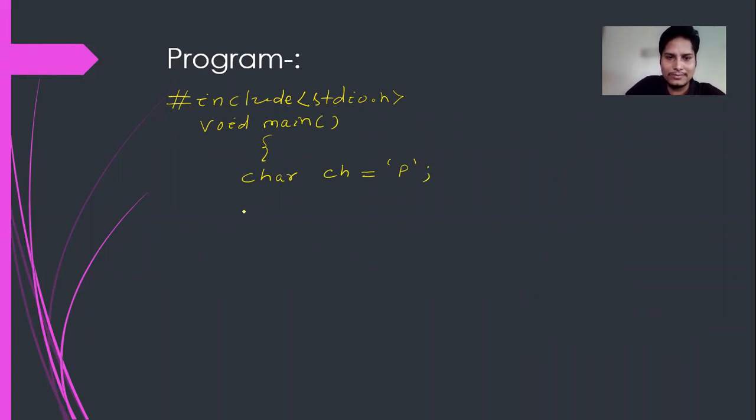So now, I want to display this character screen. Character is equal to percentile c, normal quotations, and ch semicolon, and this is end.